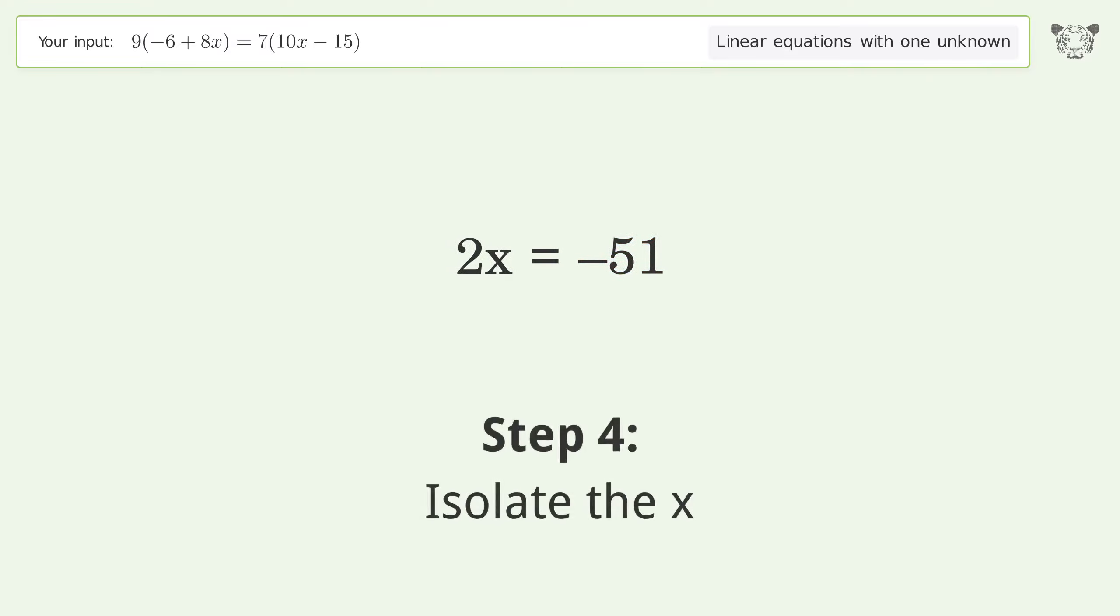Isolate the x. Divide both sides by 2. Simplify the fraction. And so the final result is x equals negative 51 over 2.